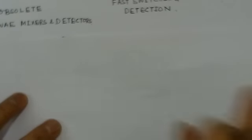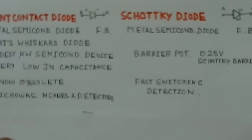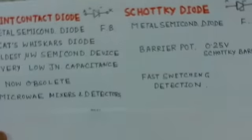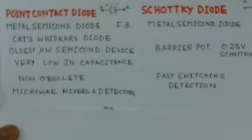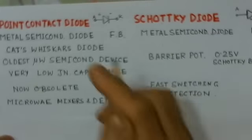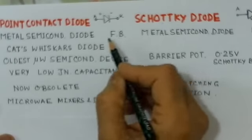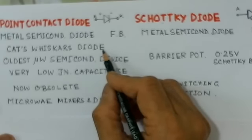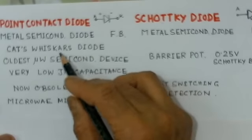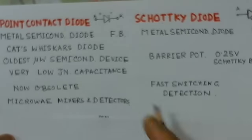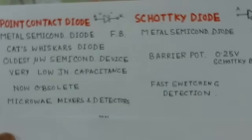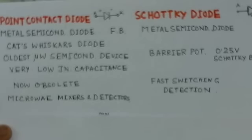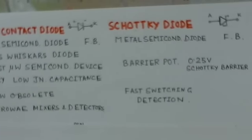The point contact diode is the oldest diode, and its symbol is indicated here. It is a metal-semiconductor diode operating under forward bias, also called the cat whiskers diode because it provides cat whiskers. The oldest microwave semiconductor diodes fall under this category. A very special feature is its very low junction capacitance, which makes it suitable for applications in microwave mixers and detectors.